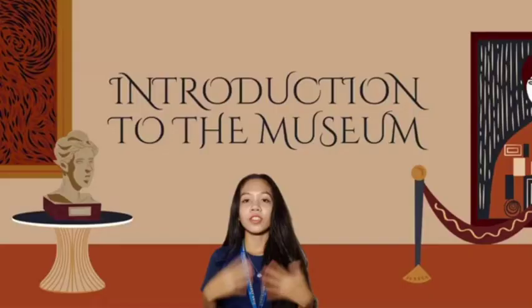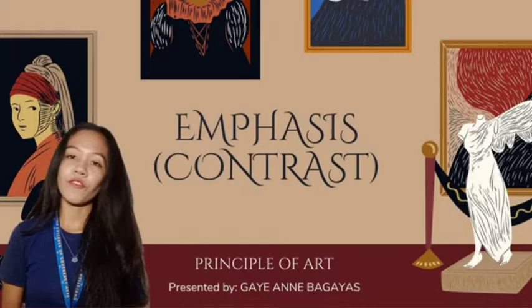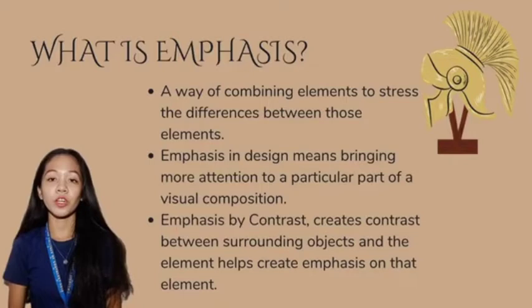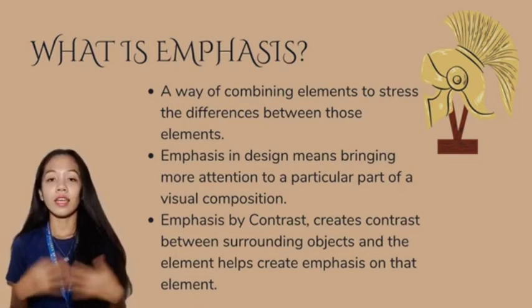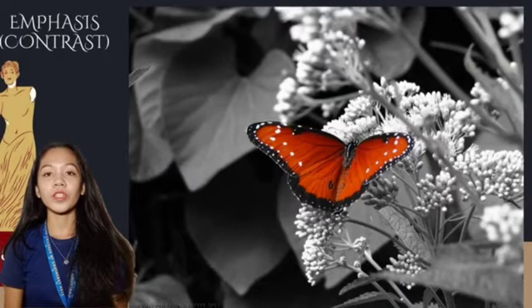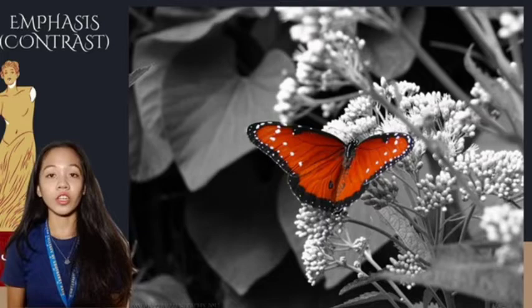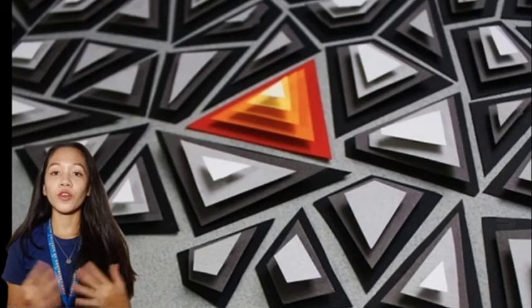Good afternoon everyone, I'm Gay Ann Bagayas, and now I'm going to discuss emphasis and proportion, which are principles of art. Emphasis in design means bringing more attention to a particular part of a visual composition, while contrast is the difference between two or more objects in a design — the difference could be light and dark, thin and thick, small, large, bright, and dull. An emphasis by contrast creates a contrast between the surroundings of objects, and the element helps create emphasis. For example, the principle of creating a centered interest in an artwork is often achieved by color contrast and by lines which direct the eye to it.